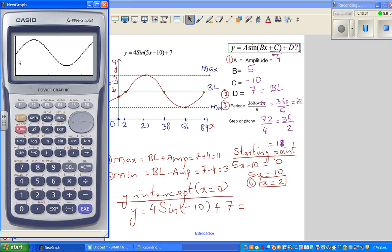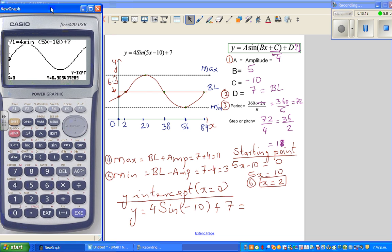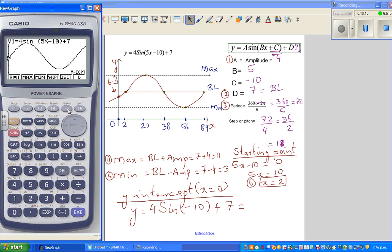Can you see? So we'll check the y-intercept. G-Solve, y-intercept. When x is 0, y is 6.3. That's what we saw, that's what we got. Then again, G-Solve, and you find maximum. Maximum is at 20, 11. And G-Solve minimum should be at 56. Minimum is at 56, 3. So it's perfect. See you in the next video.